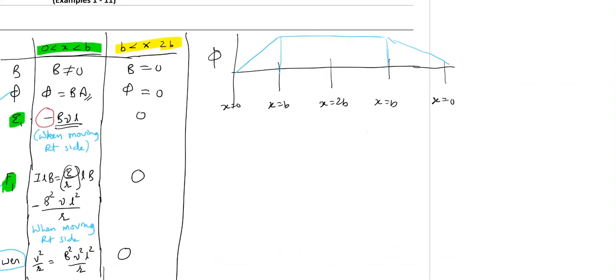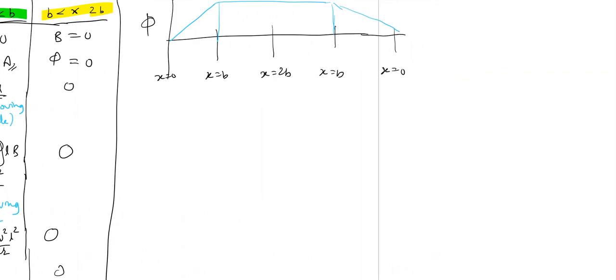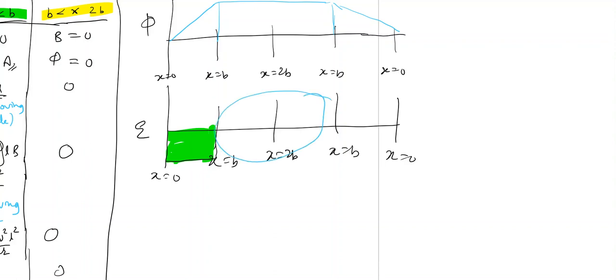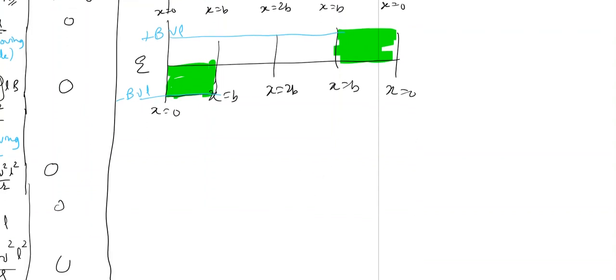Next, if I plot emf, what is the nature of emf? When you are going from x equal to 0 to x equal to b, emf is negative. It is minus bvl. Check the table. Emf is minus bvl, constant, because velocity is constant. When you are coming back, in this region you don't have any emf. We are outside, so no emf. But when you come back, emf will be plus bvl. This is plus bvl and this is minus bvl.